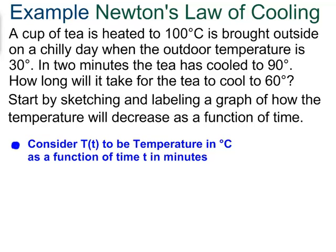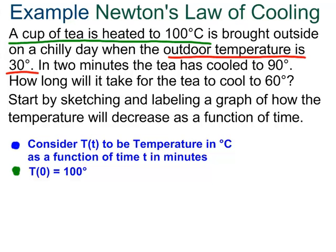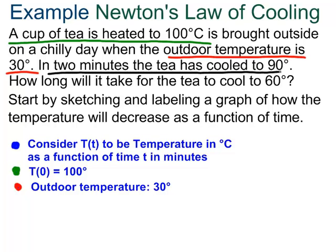The first piece of information in this text here, that the tea is heated initially to 100 degrees Celsius, that means that in this equation we come up with, I better be able to plug in time t equals zero, and get a capital T temperature of 100 degrees. The fact that it is 30 degrees outside, that is going to be relevant. That is not the tea's temperature, so I'm not going to put capital T equals 30 degrees, but I'll just say that the outdoor temperature is 30 degrees.